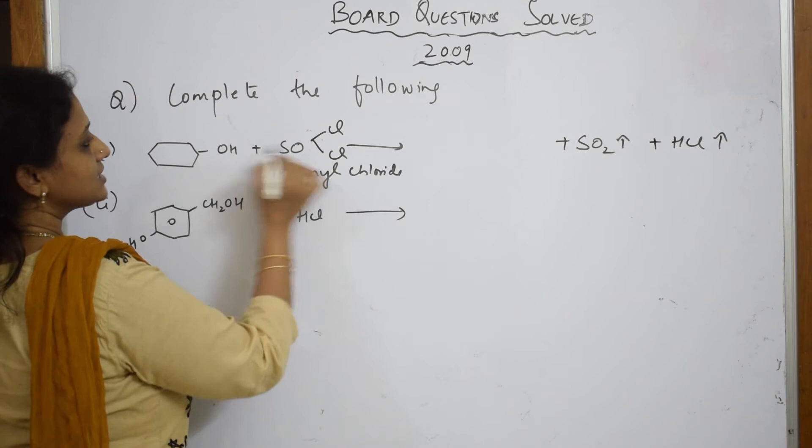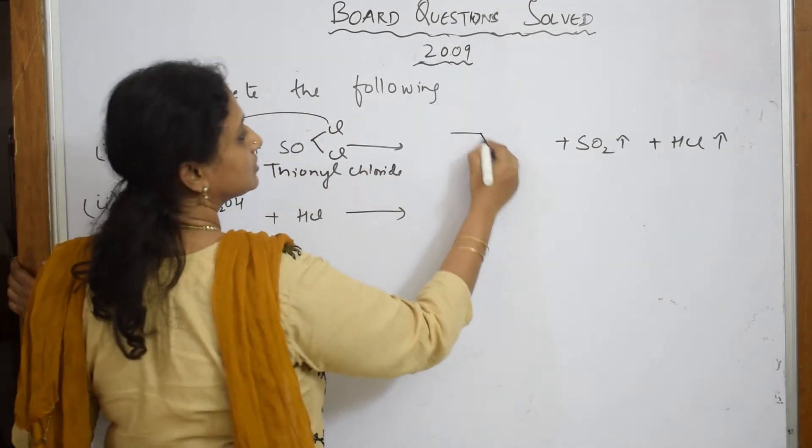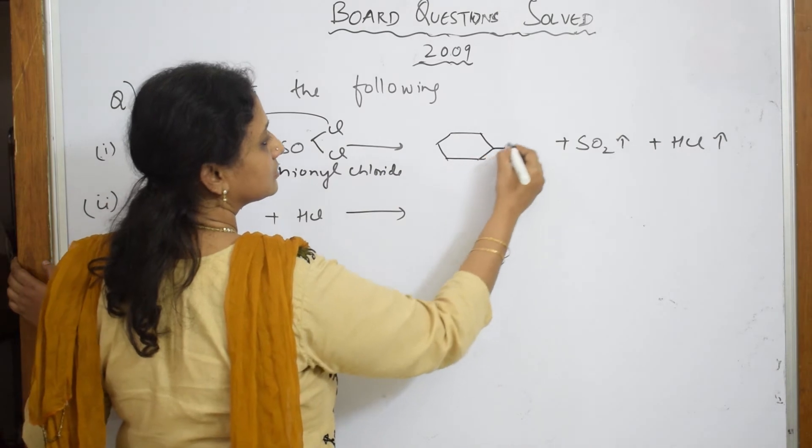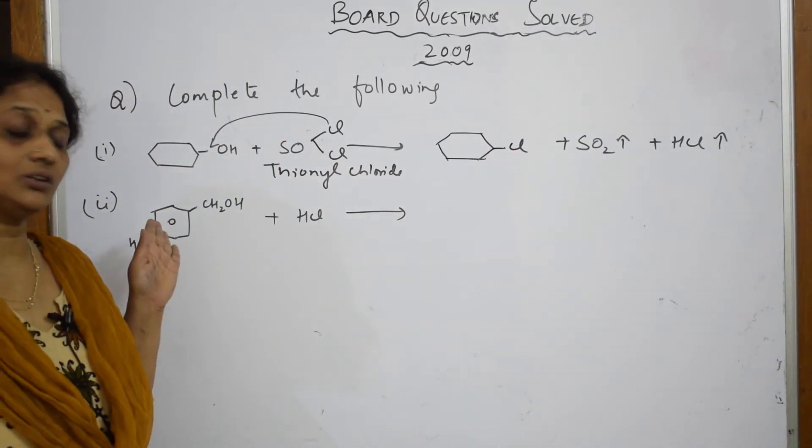Now what else is done? Sulfur dioxide is done, HCl is done. Now this new chlorine is going to come and occupy this. See, that's it. Cyclocompounds, cyclohexanol.